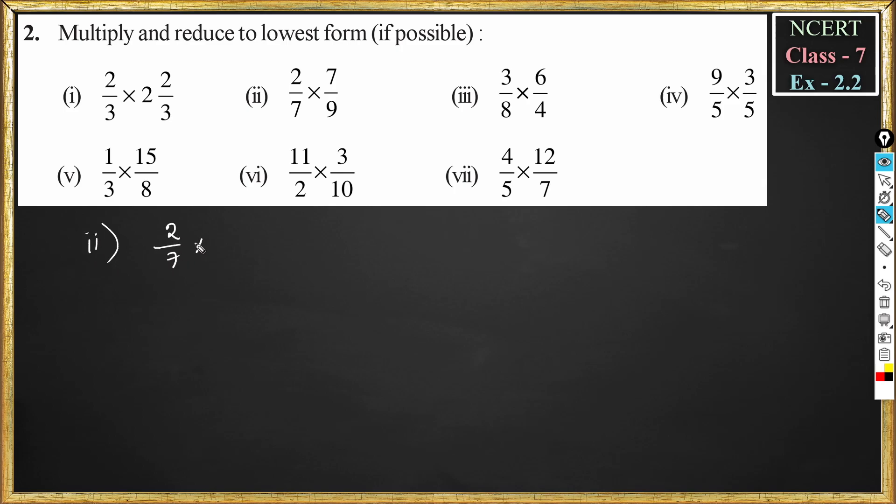Now problem 2: 2 by 7 into 7 by 9. So this you can write as 2 into 7 divided by 7 into 9. 2 into 7 is 14, divided by 7 into 9 is 63. Now the common factor is 7. 7 times 2 is 14, 7 times 9 is 63. So this becomes 2 by 9. The answer is 2 by 9.